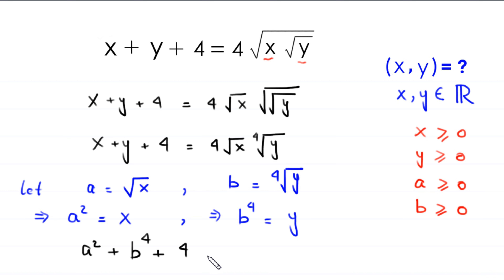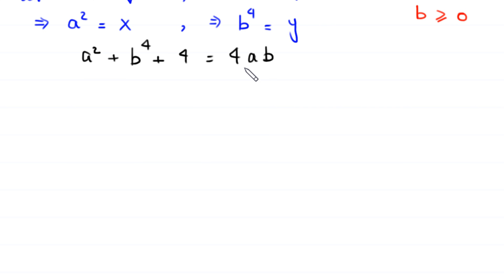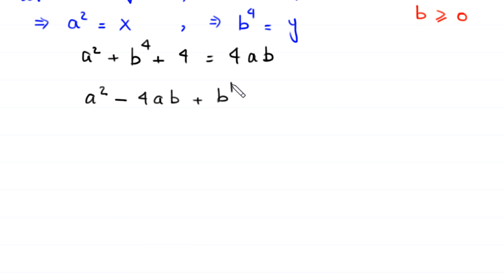So the original equation becomes a squared plus b to the power 4 plus 4 is equal to 4 times a times b. We move 4ab to the left-hand side, giving a squared minus 4ab plus b to the power 4 plus 4 equals 0.